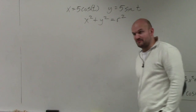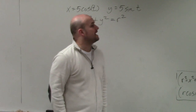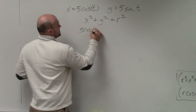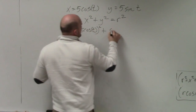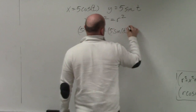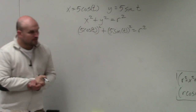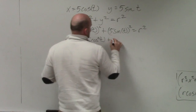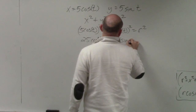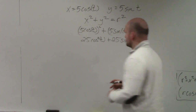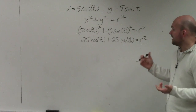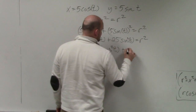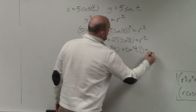The equation of a circle, which was provided to you in geometry, is going to help us solve this. So if x is 5 cosine of t, then I can write 5 cosine of t squared plus 5 sine of t squared. That gives us 25 cosine squared of t plus 25 sine squared of t equals r squared.